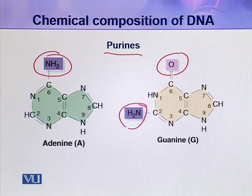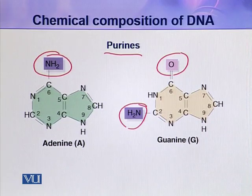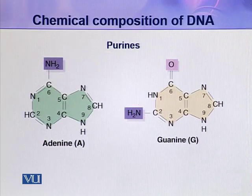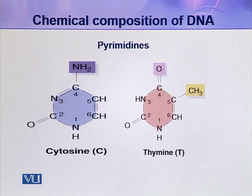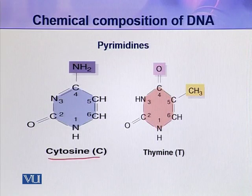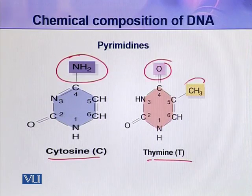Look at the numbering — the bases are conventionally numbered, but no prime designation is given, to distinguish them from the numbered atoms in the pentose sugar. The next two nitrogenous bases are pyrimidines: cytosine and thymine. These two are slightly different from each other, and both are derivatives of pyrimidine.